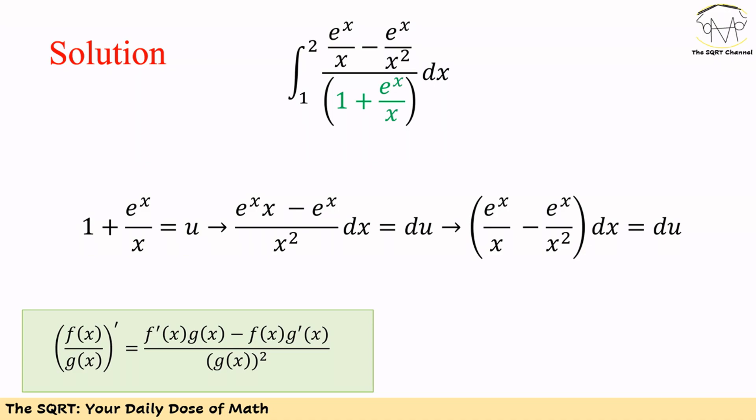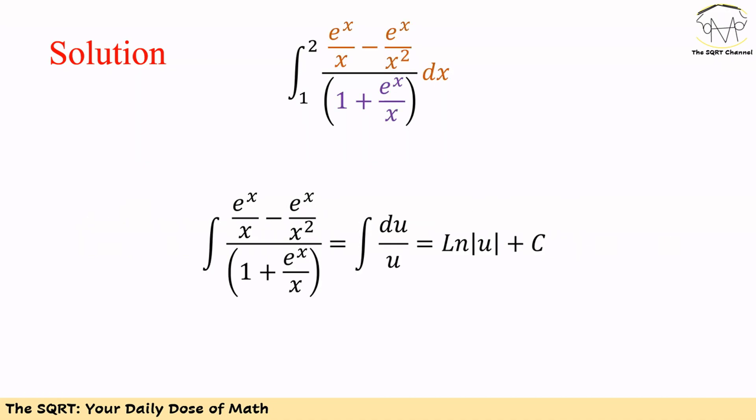To understand it better, consider the green box shown here. If you want to get the derivative of f(x) over g(x), you replace it with the derivative of f(x) times g(x) minus f(x) times the derivative of g(x), all over g(x) squared.